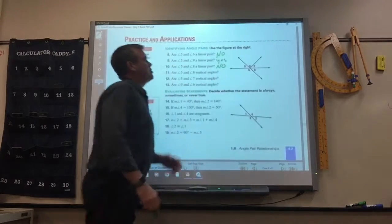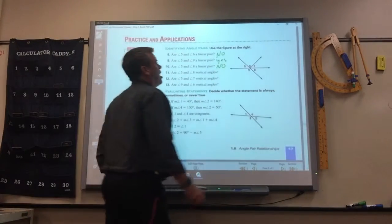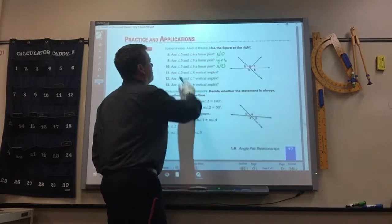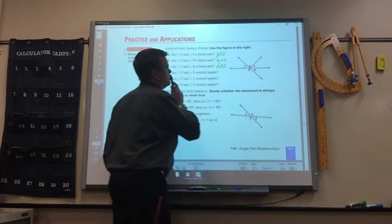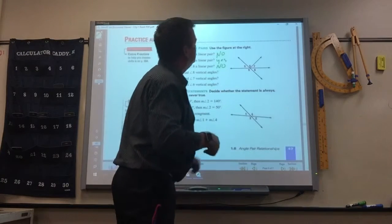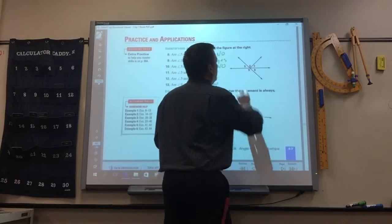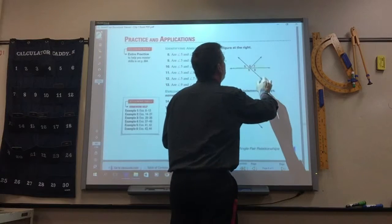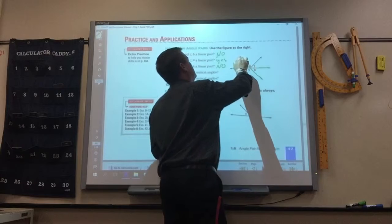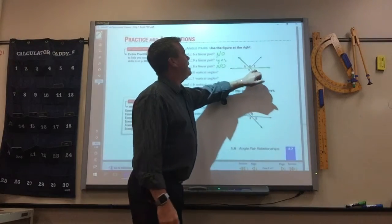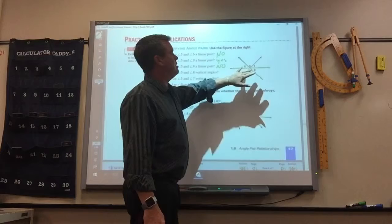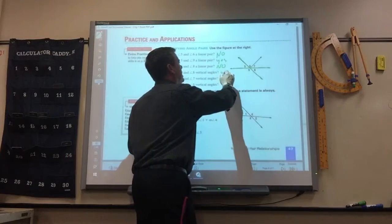Remember, they got to form a straight line. Are 5 and 8 vertical? So vertical are formed by two straight lines. So 5 and 8, you can see when I color it in, they are opposite each other. So that would be yes.